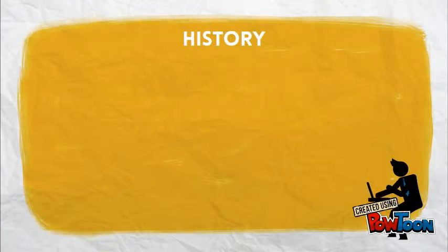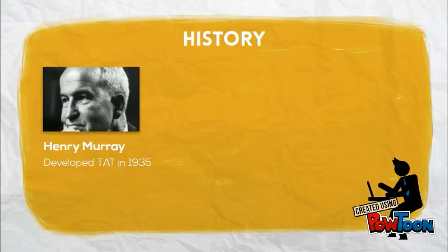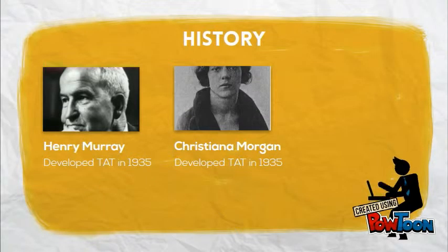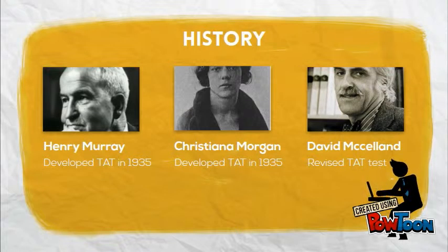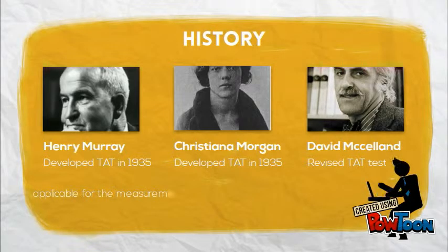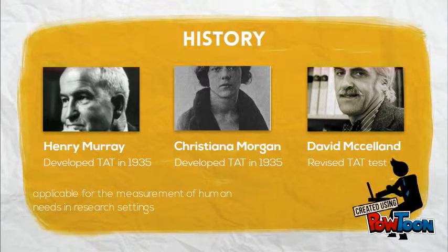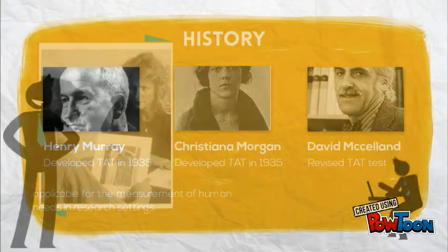Who made this TAT test? Henry Murray and Christina Morgan developed the TAT in 1935, and David McAllen revised it so that it could be applicable for the measurement of human needs in research settings and to measure motivators of different people.